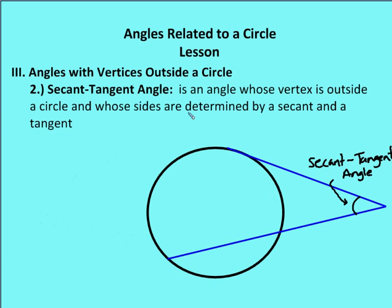Second is a secant-tangent angle — an angle whose vertex is outside the circle and whose sides are determined by a secant and a tangent. I have my tangent segment AC and then my secant AB, forming angle CAB. That's the secant-tangent angle.